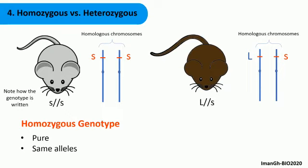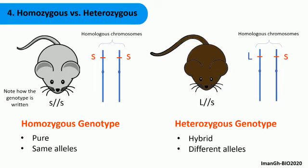As you can observe, the two alleles forming this genotype are different. Then we say that this mouse is heterozygous or hybrid for this gene.